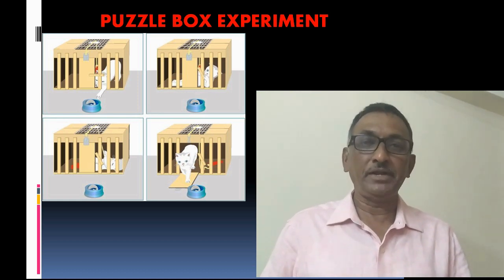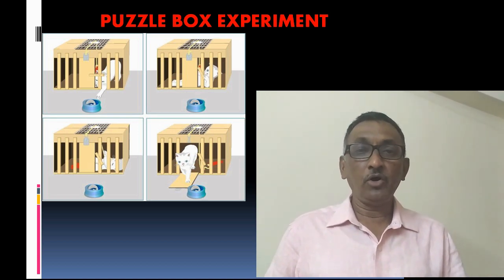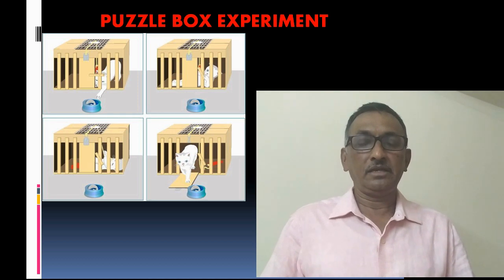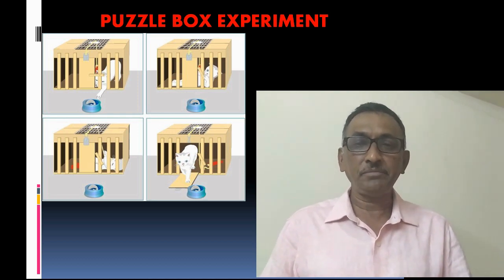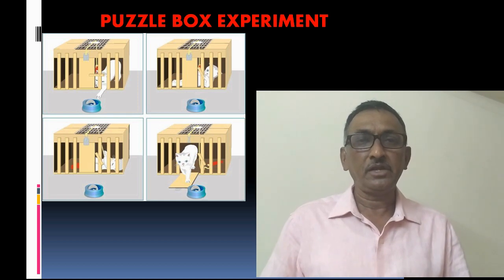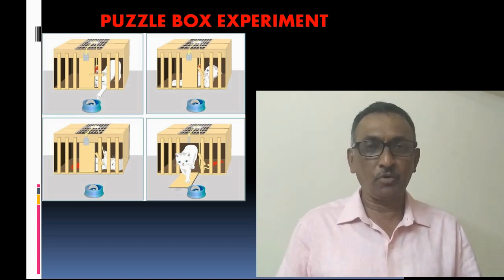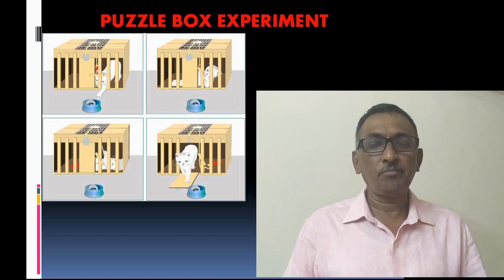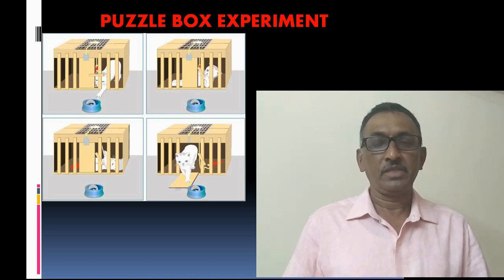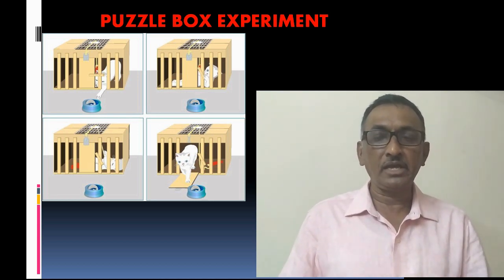In one of his experiments, he put a hungry cat in a puzzle box. Why is it called a puzzle box? The box can be opened only by pressing the lever inside the cage. The favorite food of the cat, that is fish, was kept outside the box. The cat was so hungry. Therefore, the motive of the cat was to get the food at any cost. The cat made a number of responses such as scratching the cage, pulling the bar, pushing the bar, biting the bar, and moving the movable parts. By chance, the cat pressed the lever, the door could be opened, the cat came out of the cage and got the food.